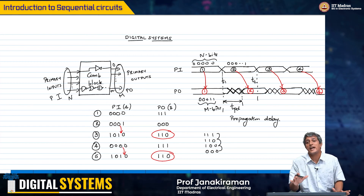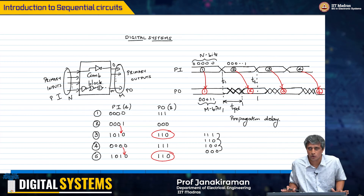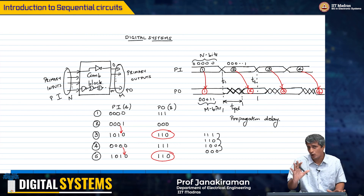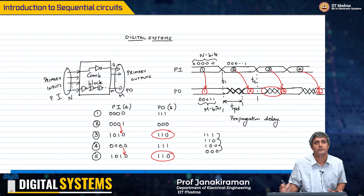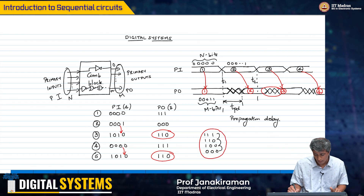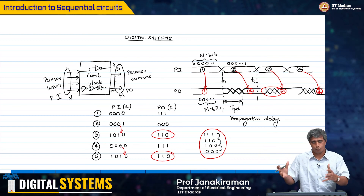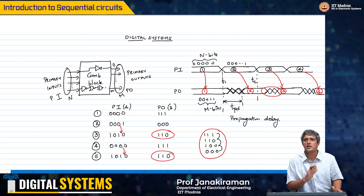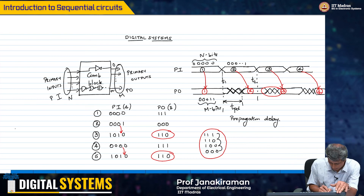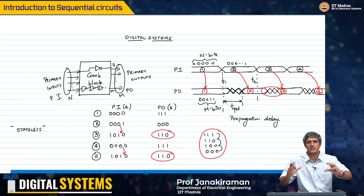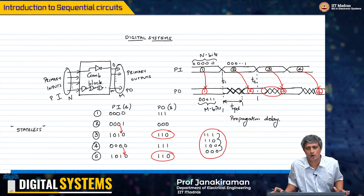The system does not depend on what state it was in before arriving at the current input. Whatever the input is at that particular instant of time, the output will stabilize to its steady-state value corresponding to that input after a certain delay — that is all. The sequence of inputs does not matter for a combinational block. There is a small note: if you focus on the transition period itself, the intermediate values may depend on the previous state, but we are only concerned with the steady-state value after the propagation delay. In that sense, combinational blocks are stateless — they do not depend on the state of the system in the previous round.